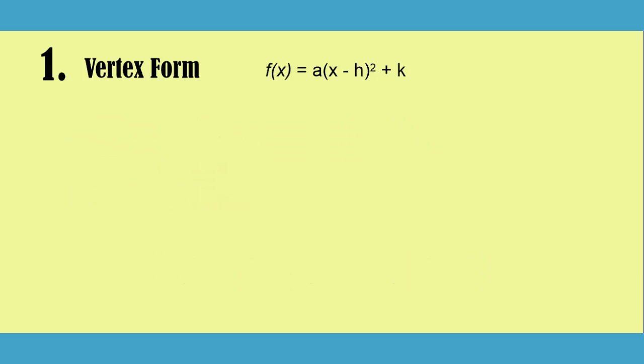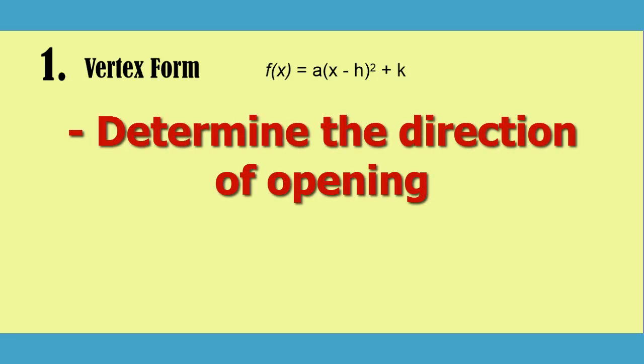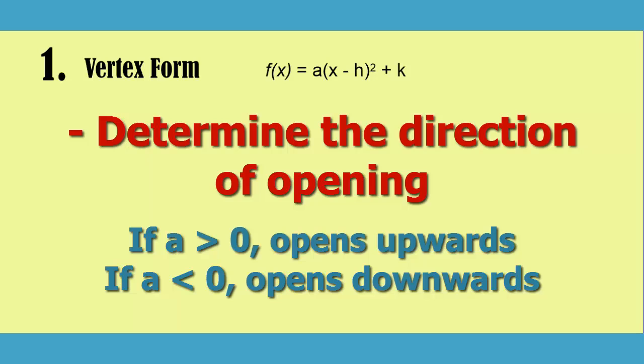Finally, we can always determine whether or not our parabola will open upwards or downwards by looking at the a value. If the a value is positive, then our parabola will open upwards, giving us a minimum value at the vertex. If the a value is negative, then our parabola will open downwards, which means that our vertex will be at the top of the parabola or give us a maximum.